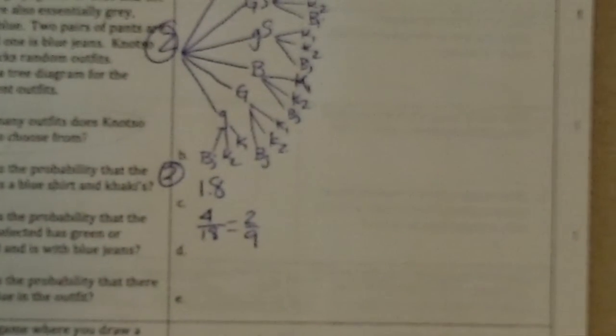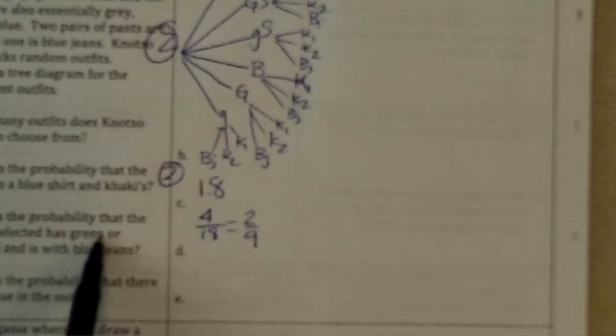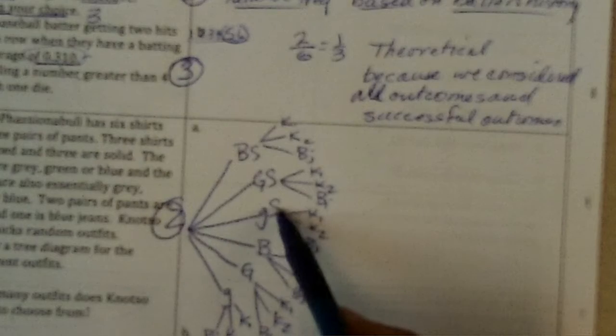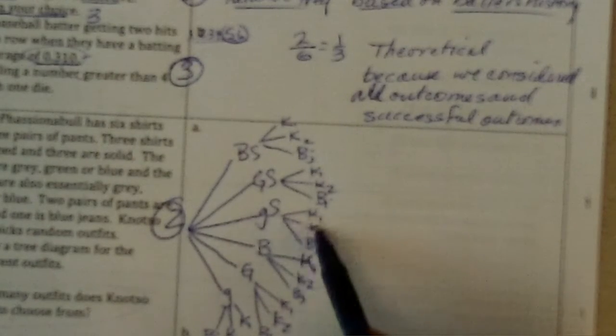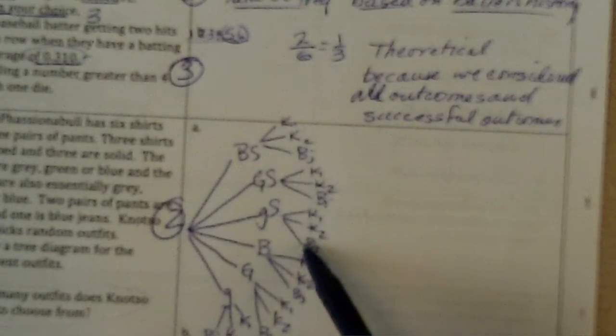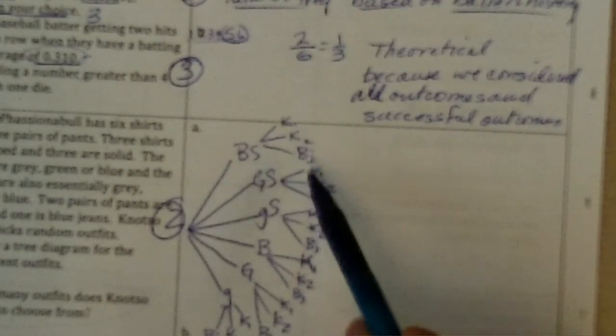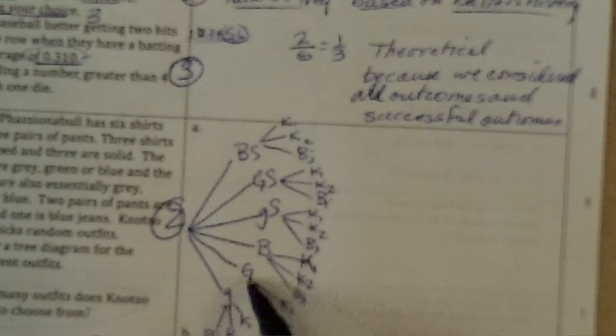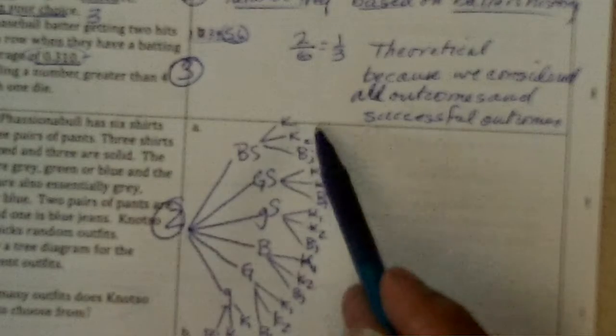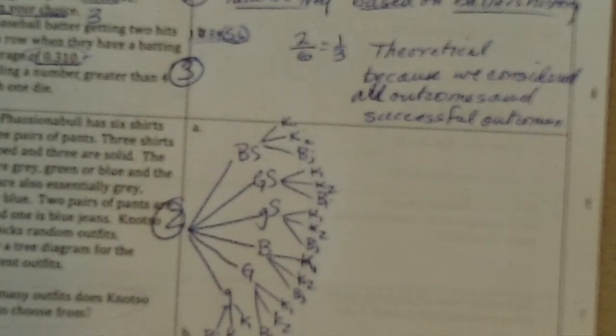What is the probability the outfit selected has green or striped? Green, that would be green. There's one, two, three. Green and striped. All of these up here are striped. So, there's three, six, nine. And down here, these are solid colors, but the green ones are these three here. So, three, six, nine, twelve. And is with blue jeans.